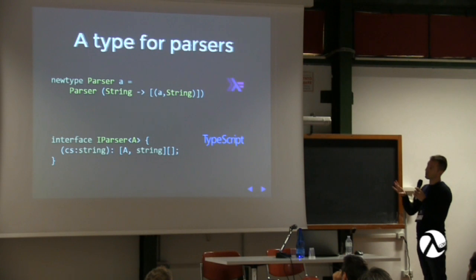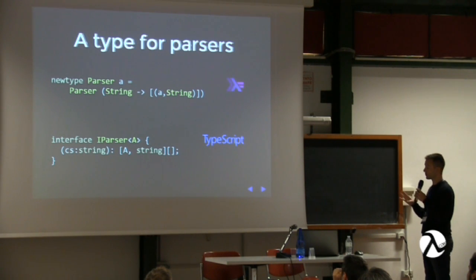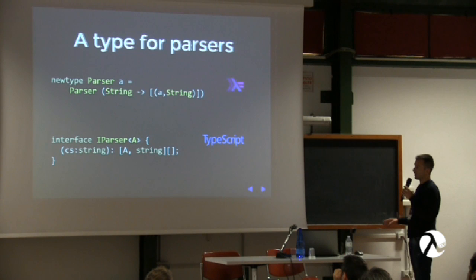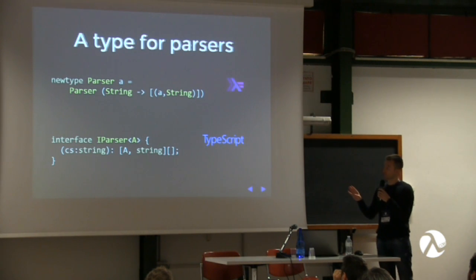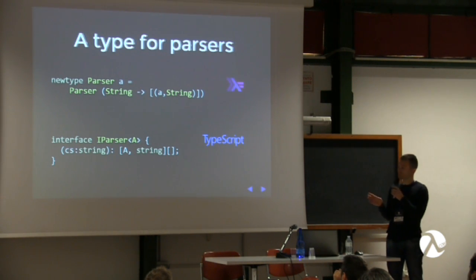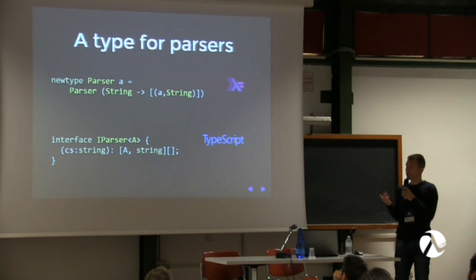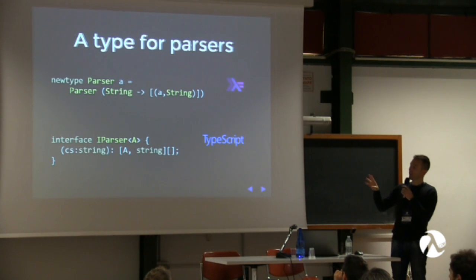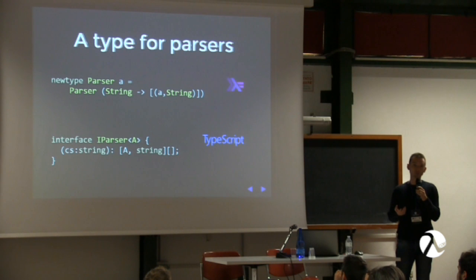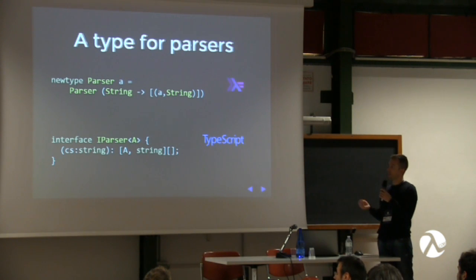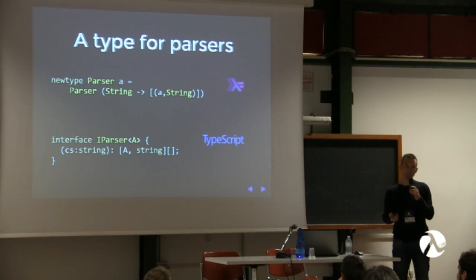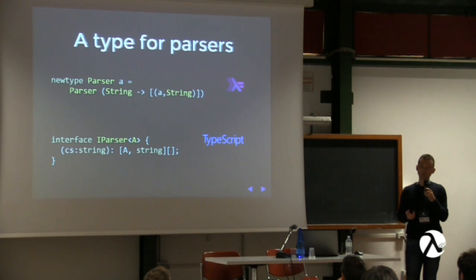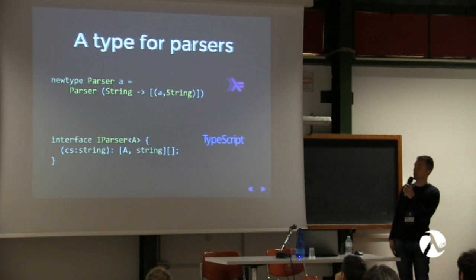The function call signature takes a string and returns an array of results. This array of results is actually an array of tuples — the syntax looks like an array of arrays, but in TypeScript it's an array of tuples. A is the first item of each tuple, and string is the second item — the remainder of the string — giving us the same structure as the Haskell implementation.